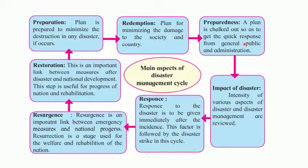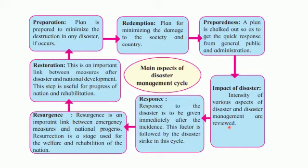Taking the example of the pandemic of the past year: once the pandemic entered the country, the entire country went into lockdown. People were informed and participated along with the administration. Next is the impact of disaster, where the intensity of various aspects of disaster and disaster management are reviewed — for instance, information about testing, quarantine, isolation, or hospitalization was communicated to the public.